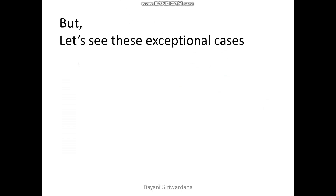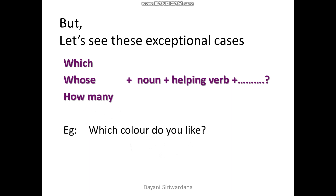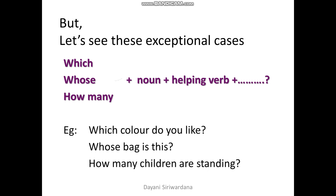The WH words we discussed up to now always follow a helping verb when used in a question. But let's see these exceptional cases: which, whose, and how many. These three WH words do not follow a helping verb — they follow a noun. After that, the helping verb is used.